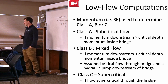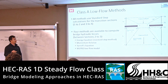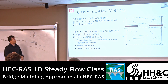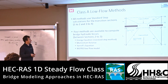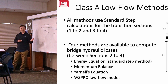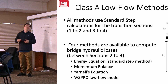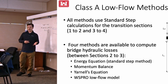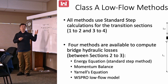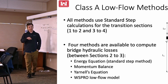Class C is when the flow is supercritical throughout the bridge — going in and out supercritically. The different bridge methods only apply between cross sections two and three; computations from cross sections one to two and three to four are the same regardless of which bridge modeling approach you choose. There are four methods available in RAS: the energy equation (also called the standard step method), a momentum balance using specific force, Yarnell's equation, and WSPRO — the latter two specifically for low flow conditions.